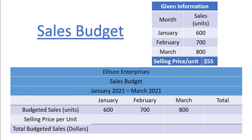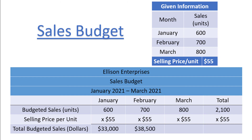It can also be helpful to have a total column for the sales budget, so adding up the three budgeted sales amounts gives us 2,100 total units sold over the three-month period. Next we need to list the selling price per unit, which is $55. We list this price in all columns including the total column, as it doesn't really make sense to add up the selling price to get a total. Then we multiply the budgeted sales in units by the price per unit: 600 units times $55 equals $33,000; 700 times $55 equals $38,500; and 800 times $55 equals $44,000. Adding up the totals gives us $115,500 of total sales for the quarter. That completes our sales budget.